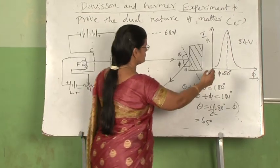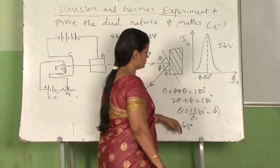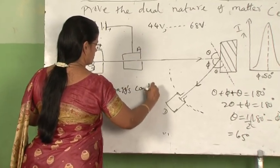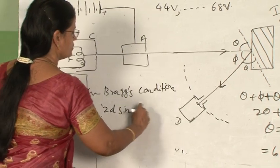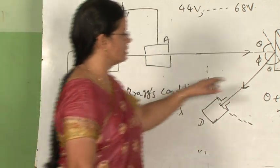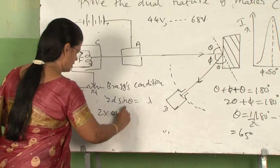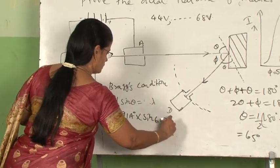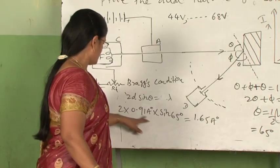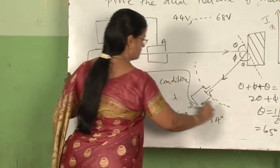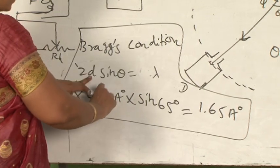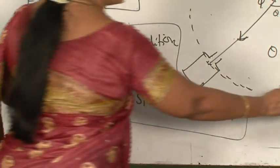Substituting phi equal to 50 degrees gives a glancing angle theta of 65 degrees. Using Bragg's condition for first-order maximum, 2d·sinθ = nλ with n=1, and substituting d equal to 0.91 angstroms for nickel crystal and sin 65 degrees, the experimental wavelength is calculated to be 1.65 angstrom units. This is the experimental value of wavelength, obtained by substituting the atomic spacing of the crystal and the theta value from the experimental graph.